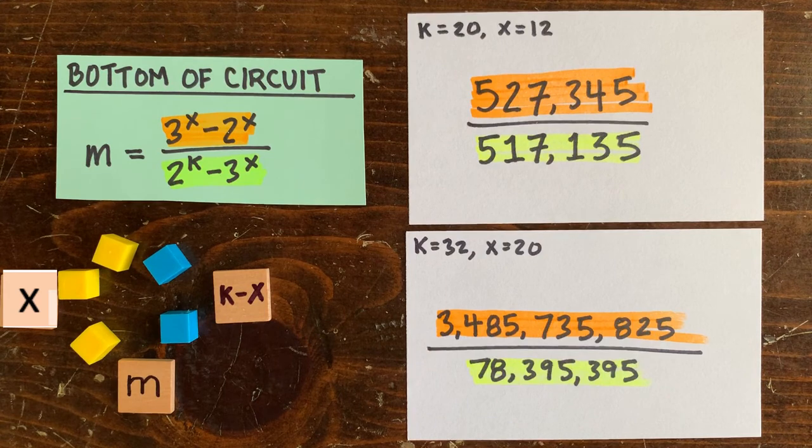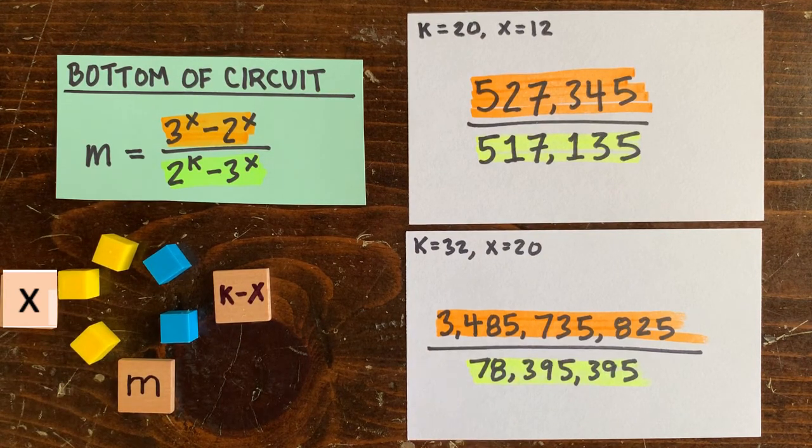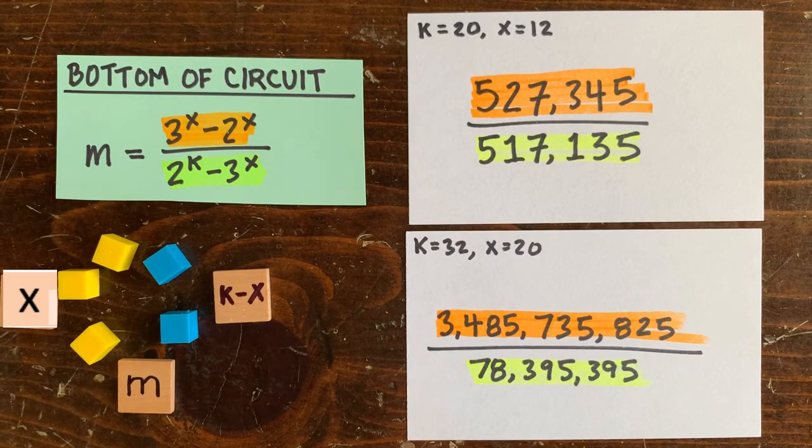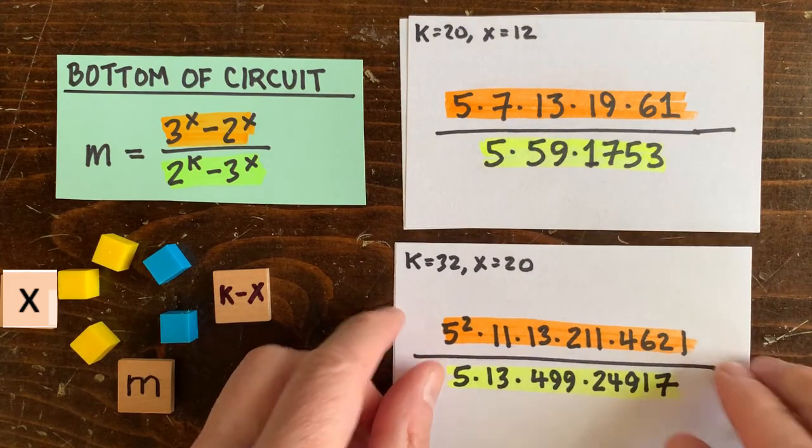And these are tiny loops we're looking at right now with a couple of dozen up and down moves. Imagine loops with millions of operations. Well, divisibility is a lot easier if we break these numbers down into their prime factors, like this.